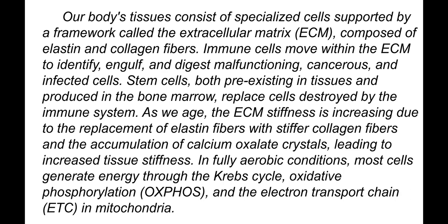Our body tissues consist of specialized cells supported by a framework called the extracellular matrix, composed of elastin and collagen fibers. Immune cells move within the extracellular matrix to identify, engulf, and digest malfunctioning, cancerous, and infected cells. Stem cells — both pre-existing in tissues and produced in the bone marrow — replace cells destroyed by the immune system. As we age, the extracellular matrix stiffens, with stiffness increasing due to replacement of elastin fibers with stiffer collagen fibers.